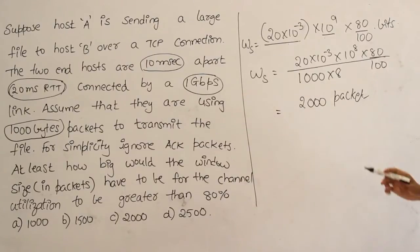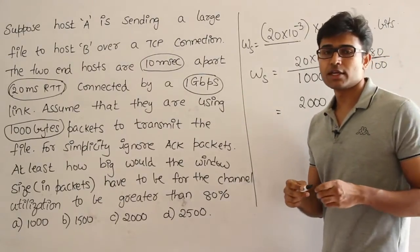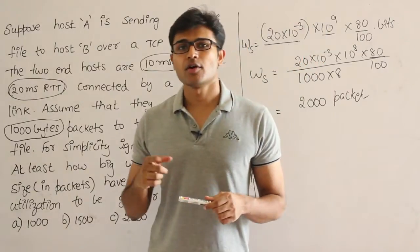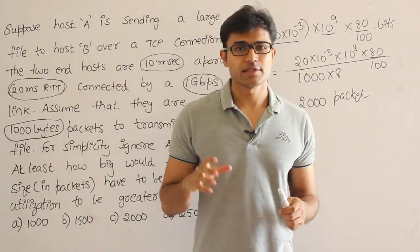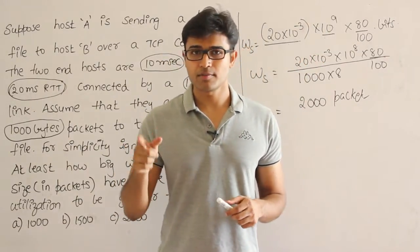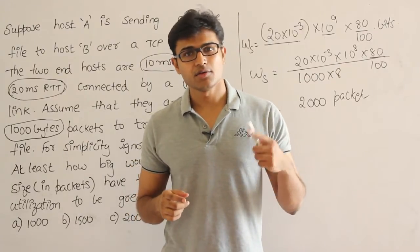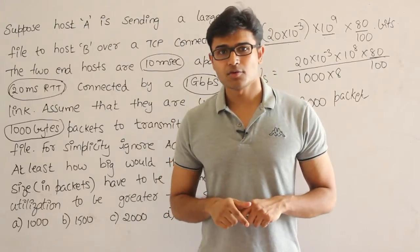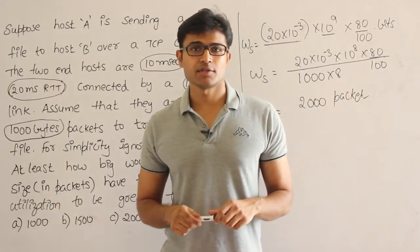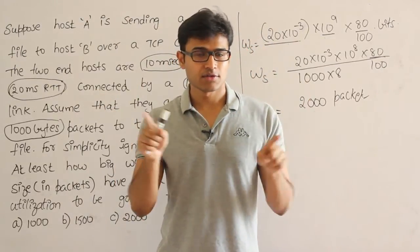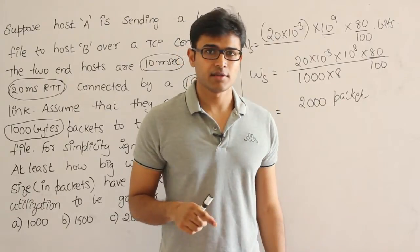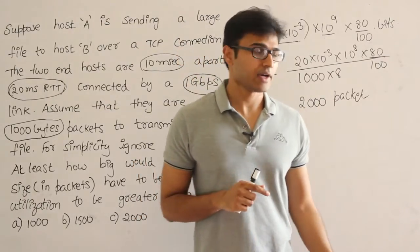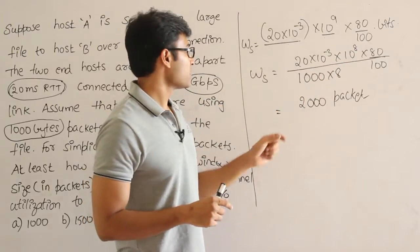So how did I calculate it? For 100% efficiency you should fill the complete channel for 20 milliseconds. In 20 milliseconds how many bits can I send? That depends on the bandwidth. Therefore RTT into bandwidth is going to give me the maximum number of bits I could send. If you want 100% utilization then your window size should be exactly equal to that. But we want only 80% utilization. That is why I am multiplying with 80%.